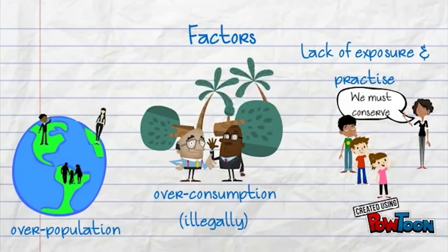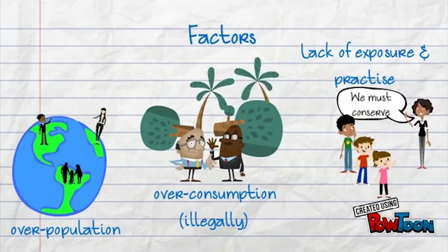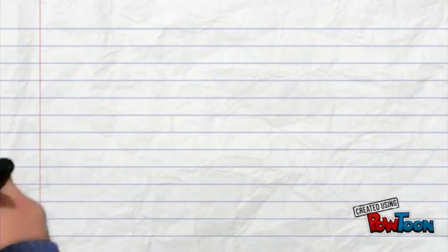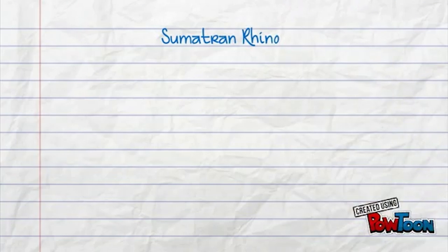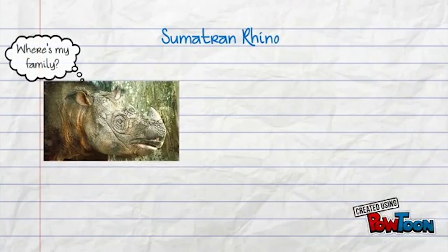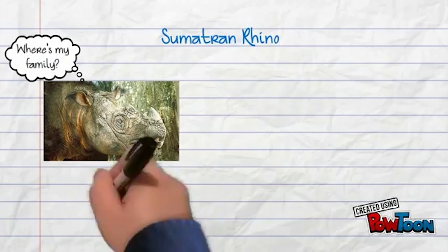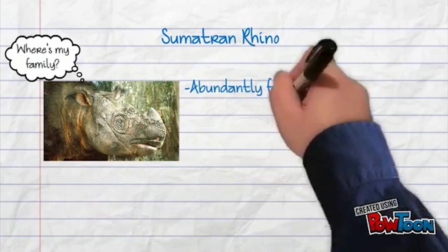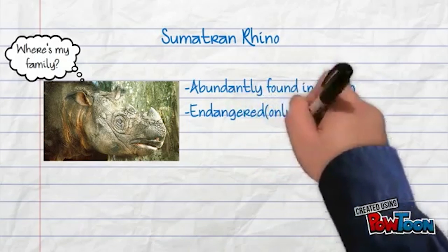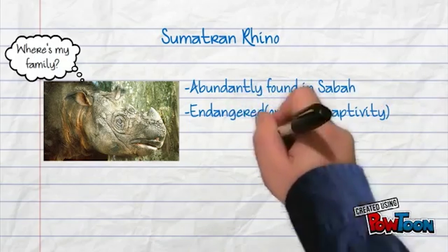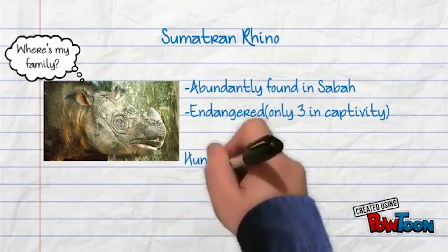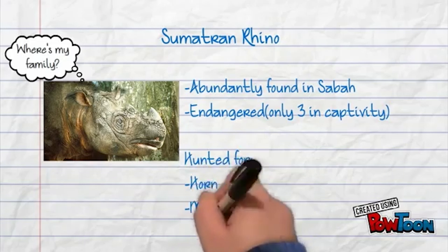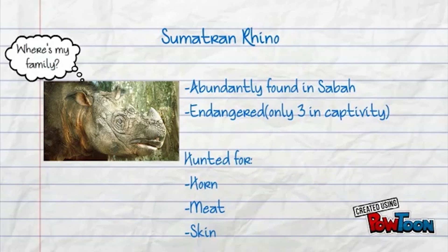There are three main species in Sabah that are affected by over-exploitation. One of them is the Sumatran rhinoceros. There are only three rhinos in Sabah and they are in captivity. All of them are unable to mate. They are hunted for their horn, meat, and body oil.